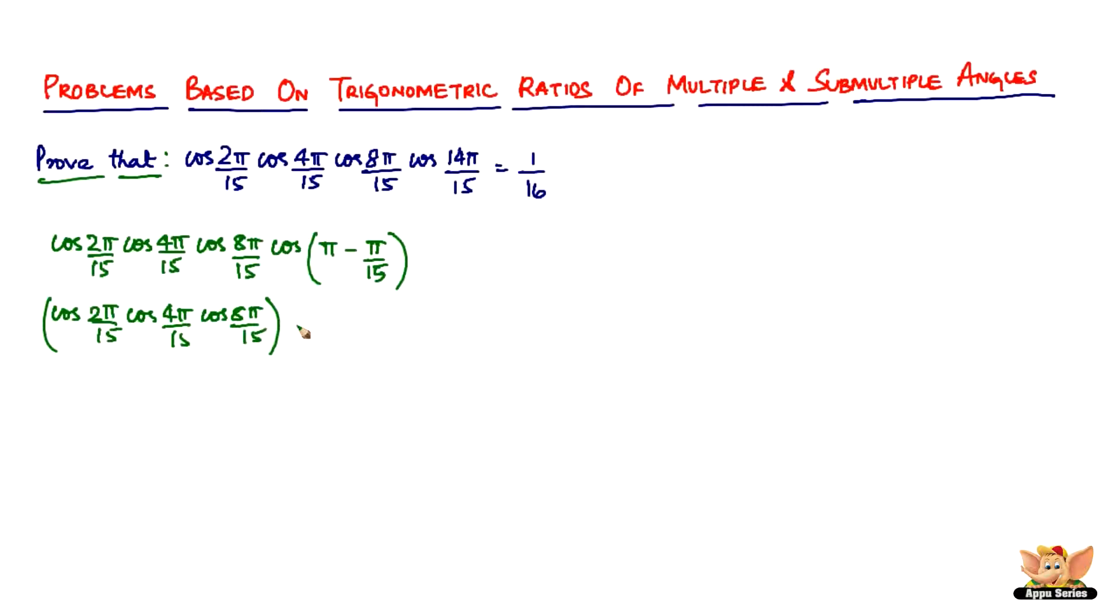So it's gonna be minus cos and 180 is not gonna change. So therefore it's gonna remain cos. So minus cos of π by 15. So that's what it's gonna be.